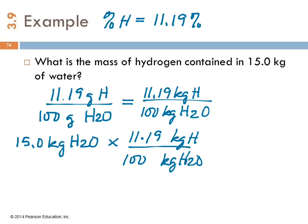If you're good with percentages, you might say all you do is 15 times 0.1119. This is just a different way of thinking about it. And we end up with 1.67 kilograms of hydrogen. Is that a reasonable mass in 15 kilograms of water? Yeah, because hydrogen is 11% of the mass of water. It's a small percentage, and this number is smaller than 15 kilograms.